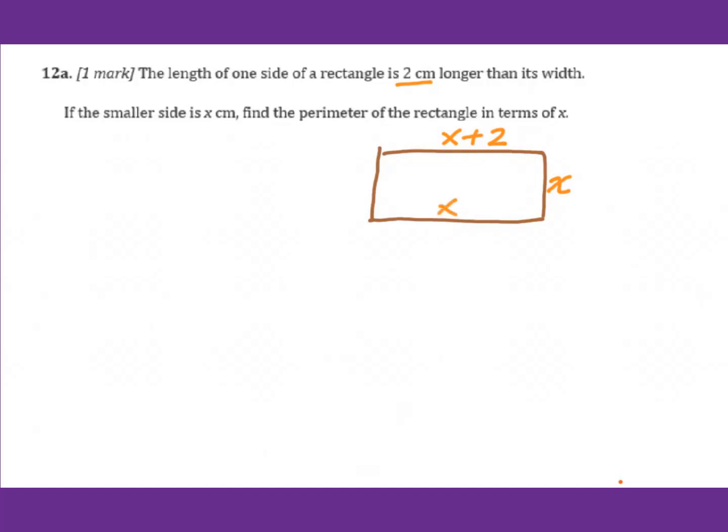The perimeter, here's x plus 2, here's x. So you add together, you will get this perimeter equals 4x plus 4.